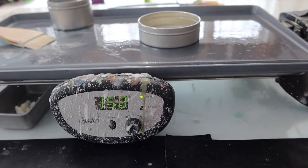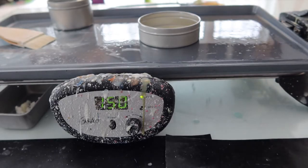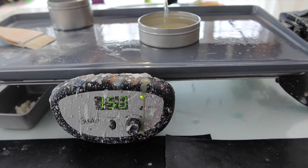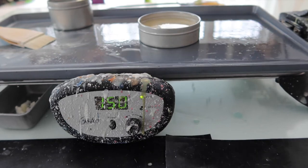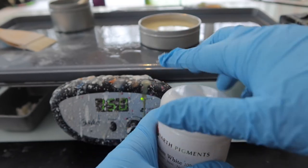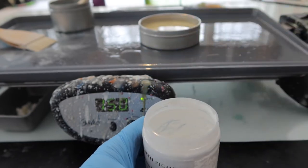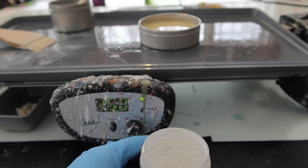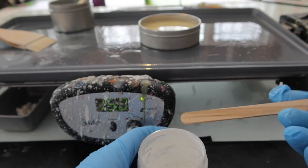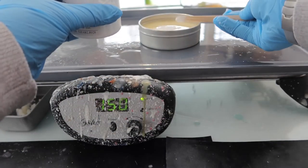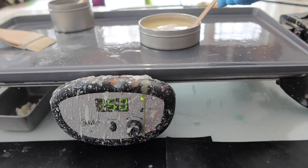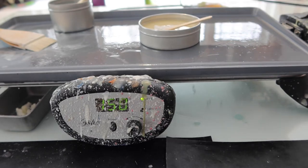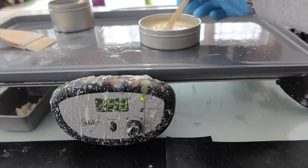Step one is to pour some clear encaustic medium into the white paint container. Step two is to add some of the titanium white dry pigment. I get mine from Earth Pigments and I just add a couple little scoops. I don't really measure but I kind of have it down to where I know how many scoops make the white I want to make.